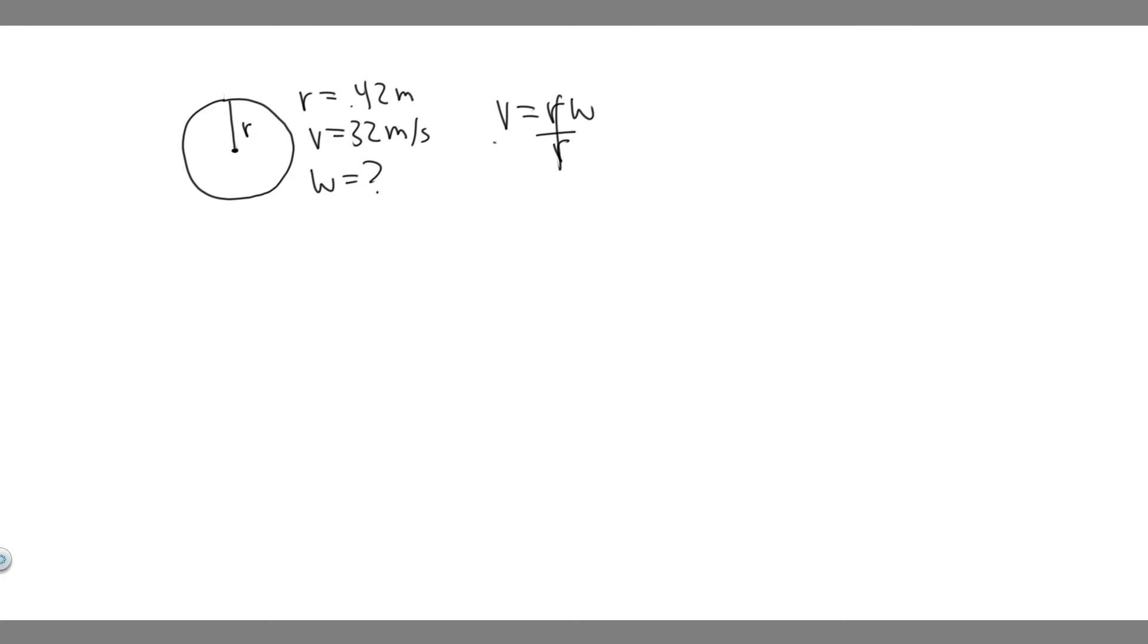So what we would do is just divide both sides by r. You'll get omega equals the velocity over r. And so all we've got to do really is just plug it in, and we'll get omega.